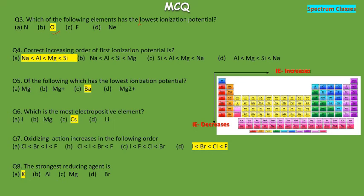The next MCQ asks for the correct increasing order of first ionization potential among sodium, magnesium, aluminium, and silicon. First arrange them by atomic number: sodium (3s1), magnesium (3s2), aluminium (3p1), silicon (3p2). Magnesium has a completely filled 3s2 orbital giving it extra stability. Moving along the period, ionization energy generally increases, so silicon has the maximum. The correct increasing order is: Na < Al < Mg < Si.